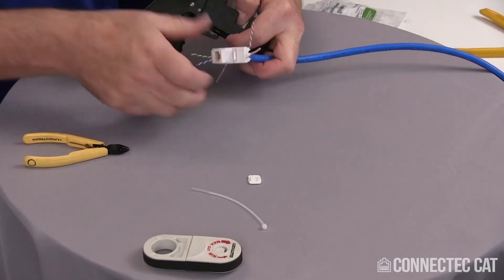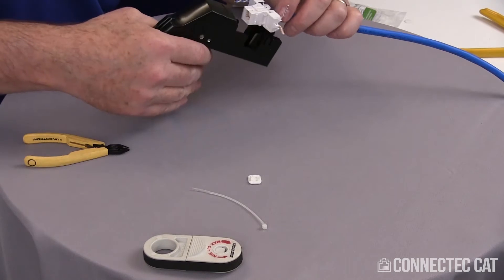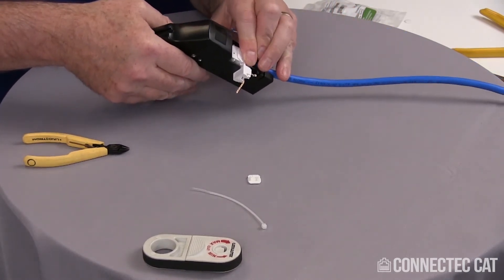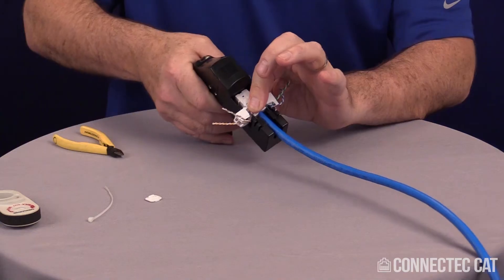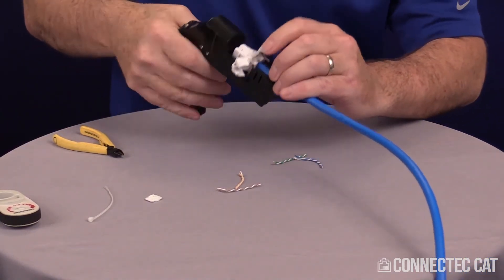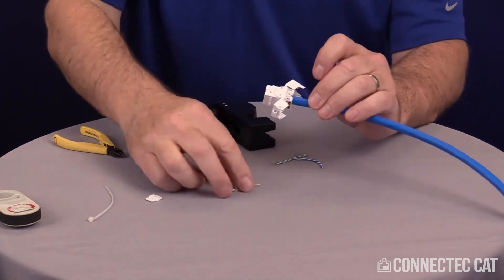Then I'll take my tool and drop this into the tool, seat it down firmly and hold it in place with my fingers, and just crimp the tool. It cuts off all the conductors and seats the load bar in place.